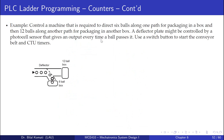The next example: we need to control a machine that directs six balls along one path for packaging in a box, then 12 balls along another path for packaging in another box. We have a deflector plate actuated by a photocell sensor that gives an output every time a ball passes. We use a start button to start the conveyor belt and CTU (count-up) counters.